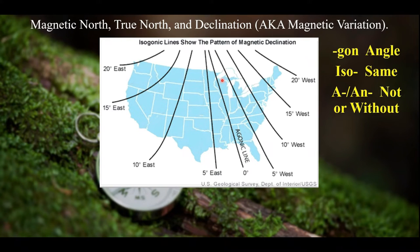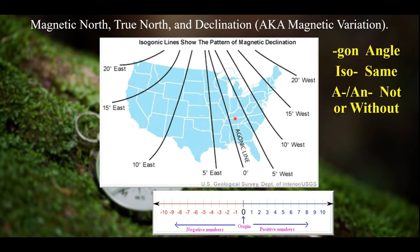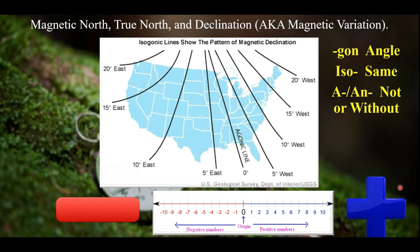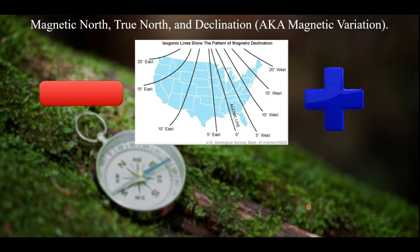Once you know the declination, you either add or subtract it from the given bearing. For example, if your commander gives you a bearing of 225 degrees and you're in northwestern Washington with a 20-degree east declination, you must add or subtract 20 degrees. To remember which, think of a number line: zero degrees lines up with zero on the number line, positive numbers are on the right, negative on the left. If you are west of the agonic line, subtract the declination; if you are east of it, add the declination.